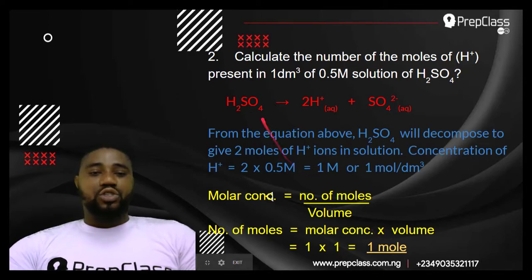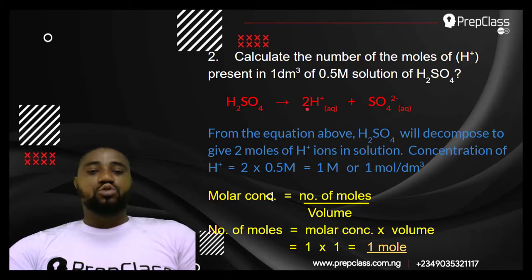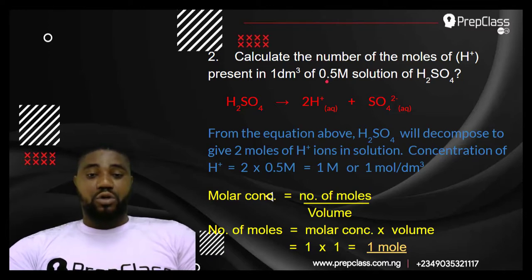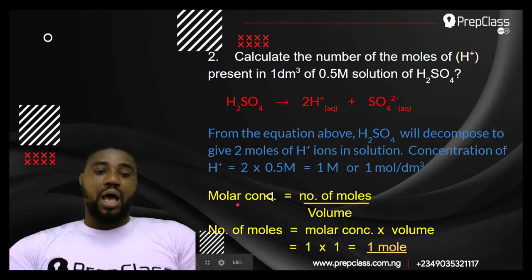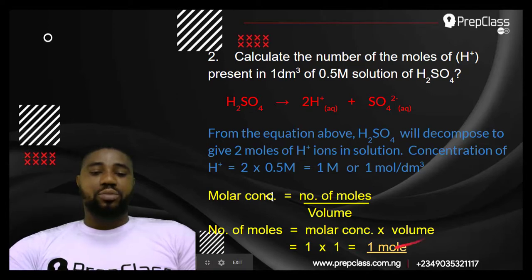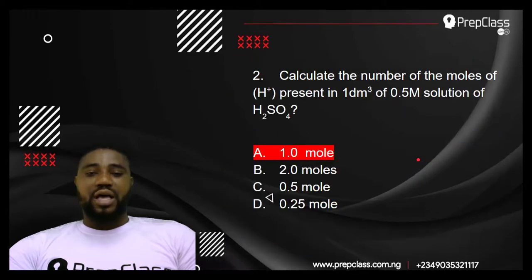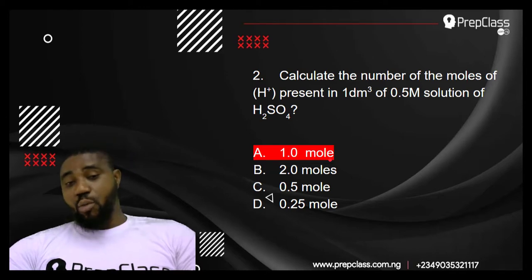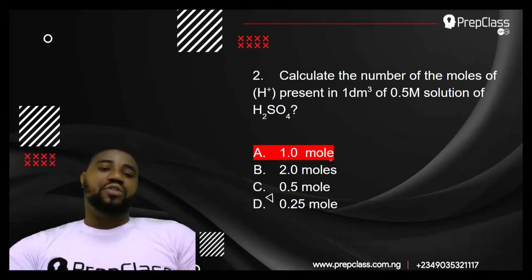Very simple. Just write the equation of dissociation to get the hydrogen ion mole ratio, multiply by 0.5 to get the molar concentration of hydrogen ions, then use the formula: molar concentration = number of moles ÷ volume. Number of moles = molar concentration × volume = 1 × 1 = 1.0 mole.